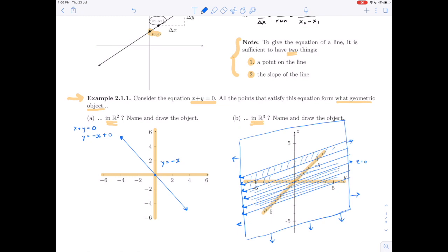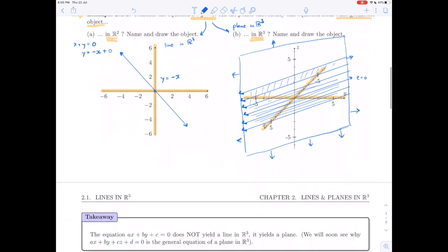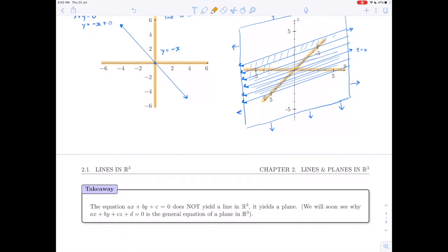Like an infinite sheet of paper. Whereas x + y = 0 gives us a line in R2, that same equation is going to end up giving us a plane in R3. There's a little moral to this example. The equation that you learned as the general equation of a line, ax + by + c, does not yield a line in R3. It yields a plane.